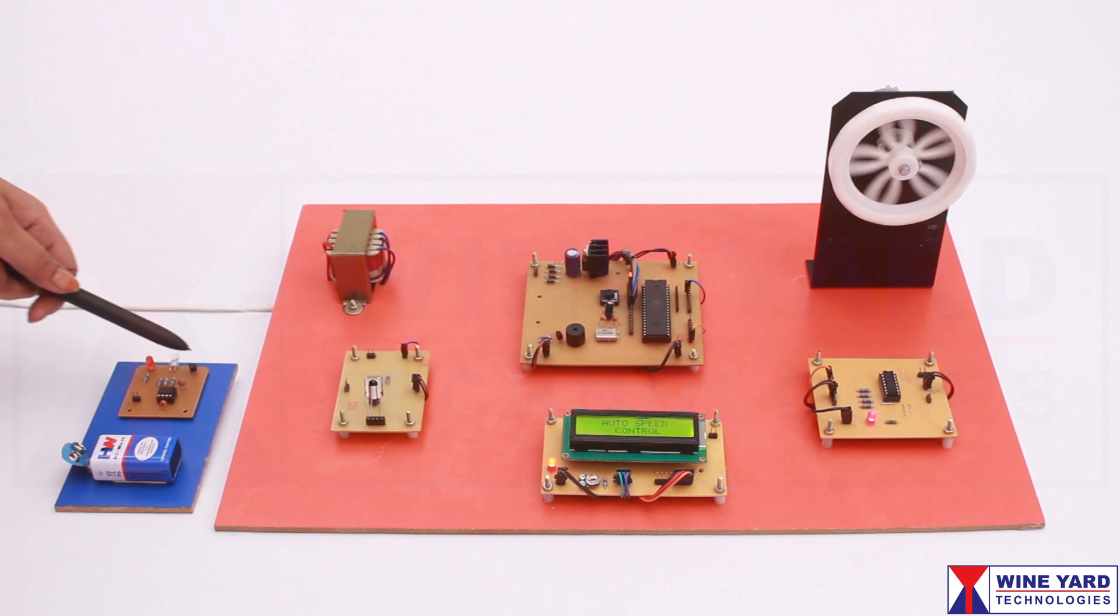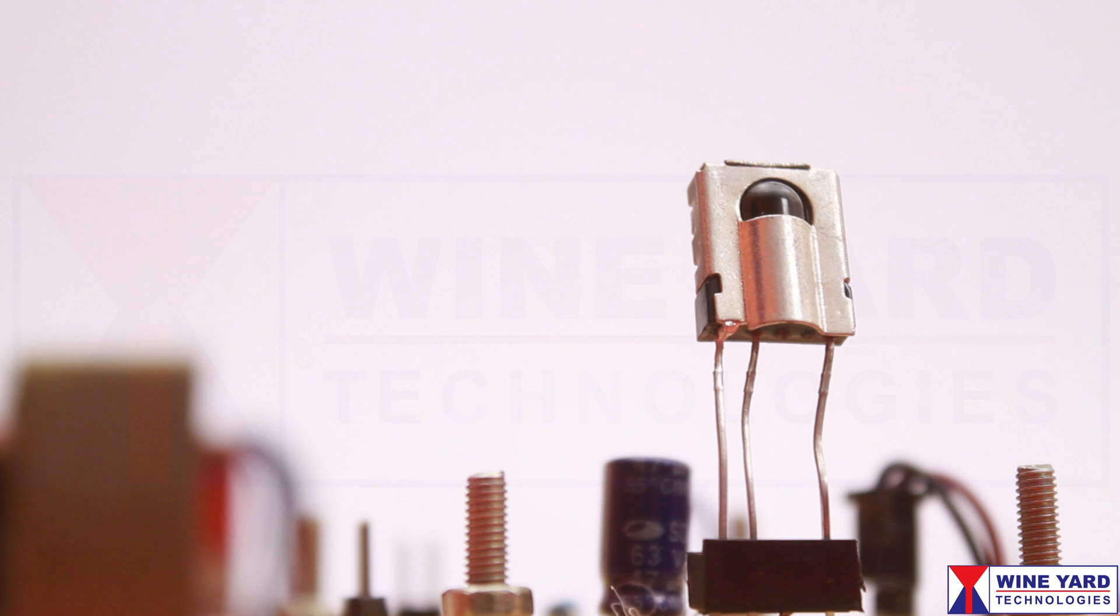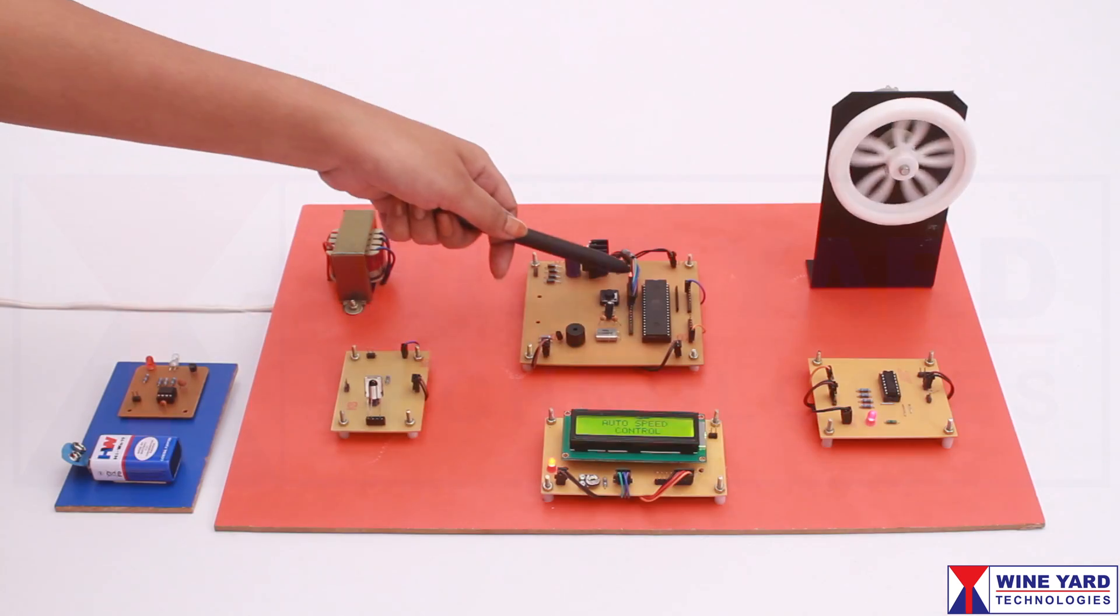The IR transmitter unit represents the school zone. Whenever the vehicle enters into the school zone, this T-SOP sensor sends a signal to the microcontroller.